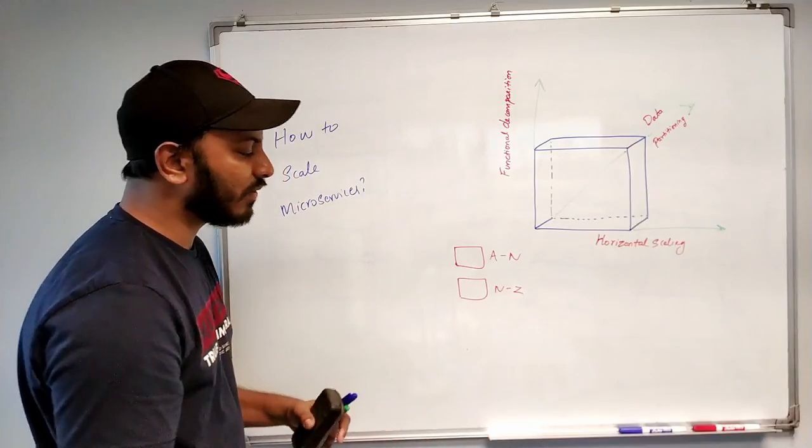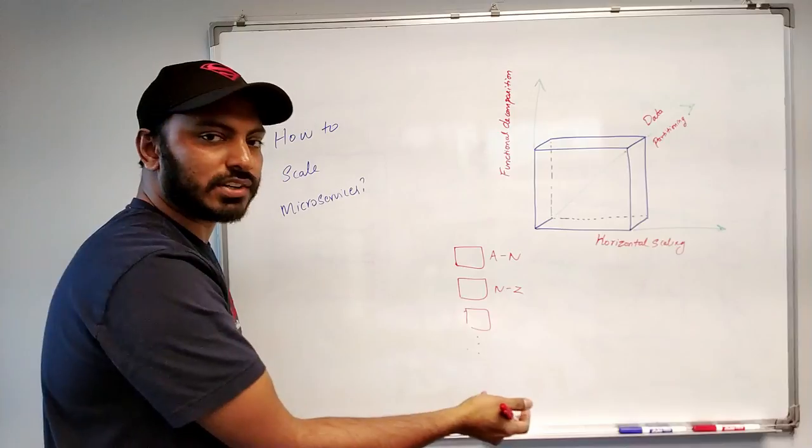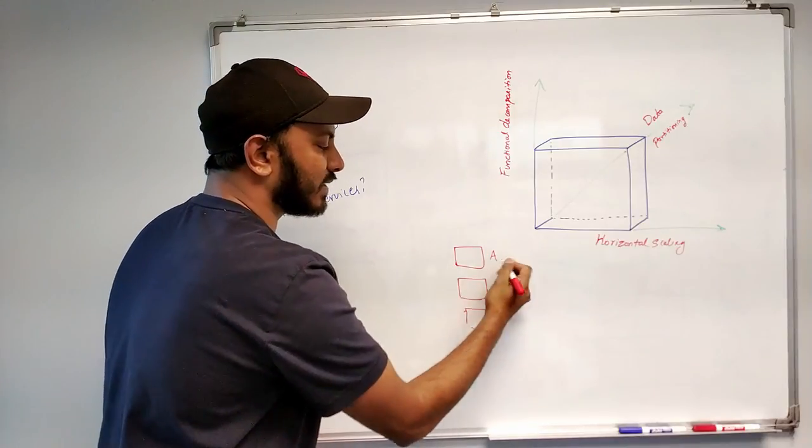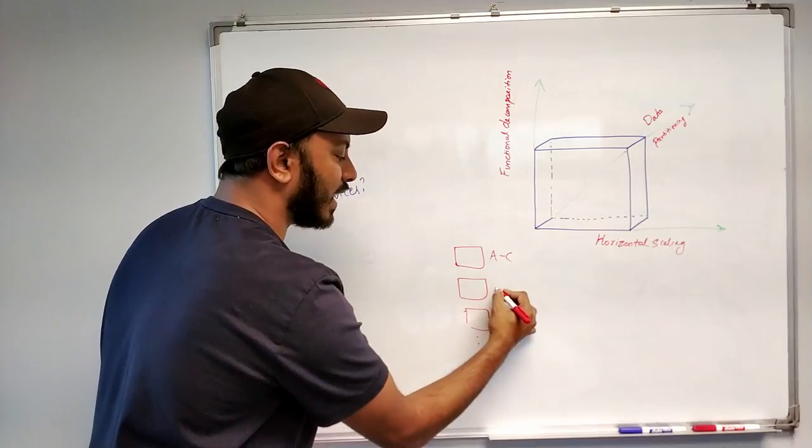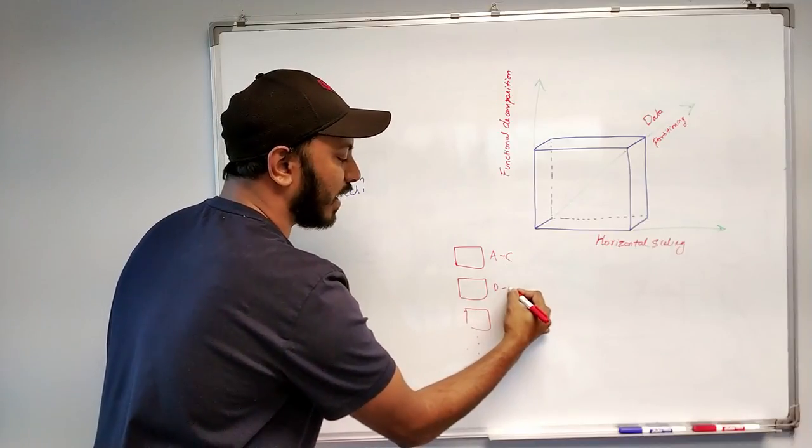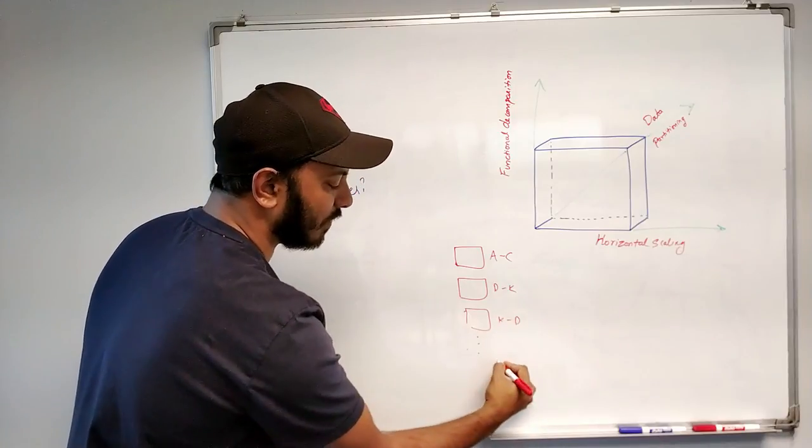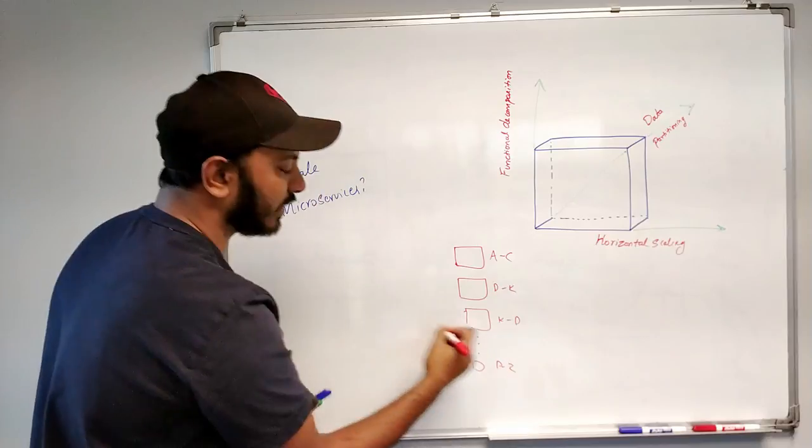So if you want to scale out even more we can add more servers and update the data partitioning keys to something like say A to C, and this guy handle from D to say K, and this guy from K to P, and another guy from P to Z. Something like this.